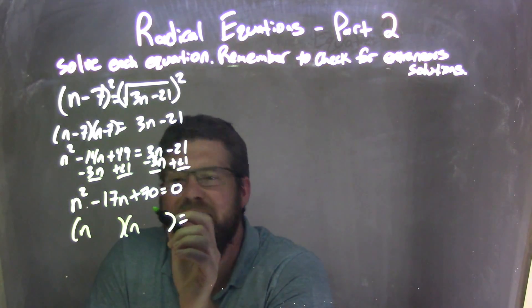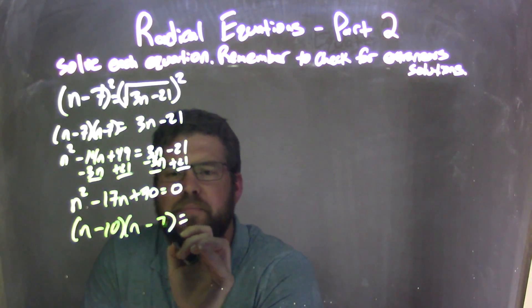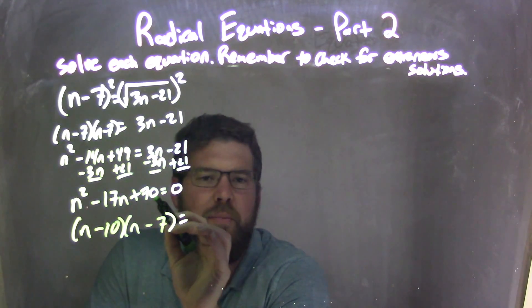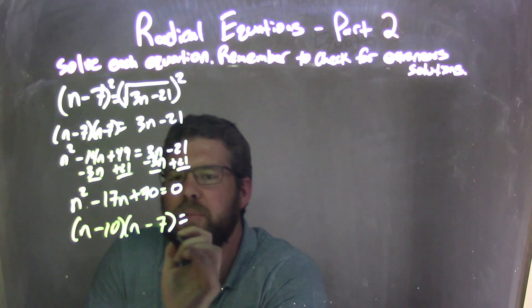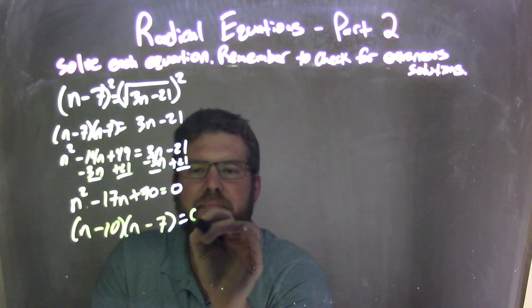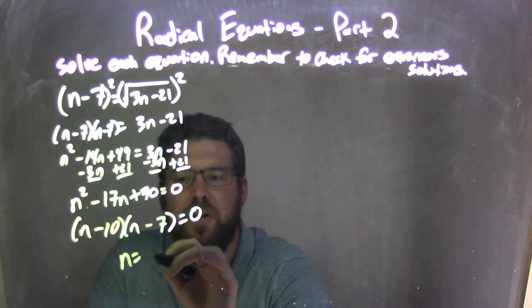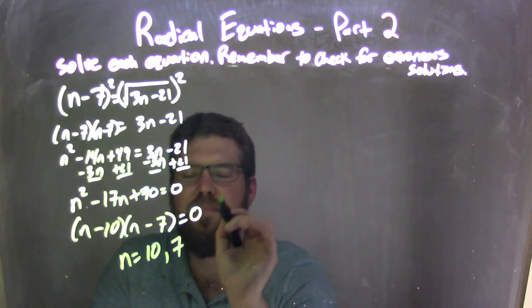I'm thinking negative 10 and then negative 7. Negative 10 times negative 7 is a positive 70. Negative 10 plus negative 7 is a negative 17. So now our two solutions here, when we set both equal to 0, is 10 and 7.